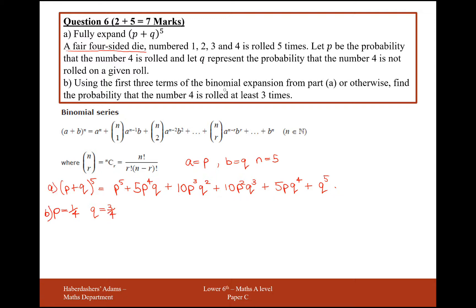Using the first three terms in the binomial expansion from part A, find the probability that the number 4 is rolled at least three times. So what we're looking for here is for it to be rolled at least three times. That can mean if it's rolled 0 times...